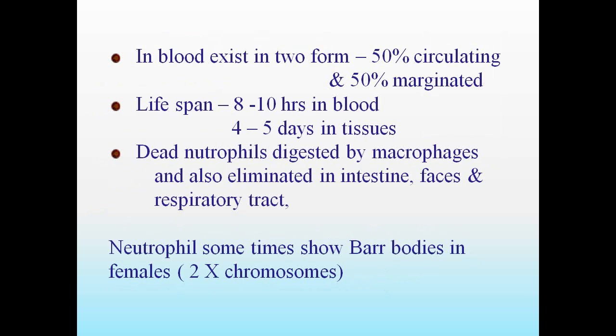An important point for exams: in blood, neutrophils exist in 2 forms — 50 percent circulating and 50 percent marginated. Lifespan is 8 to 10 hours in blood and 4 to 5 days in tissues. Dead neutrophils are digested by macrophages and also eliminated in the intestine, feces, and respiratory tract. Neutrophils sometimes show Barr bodies in females, representing the 2 X chromosomes.